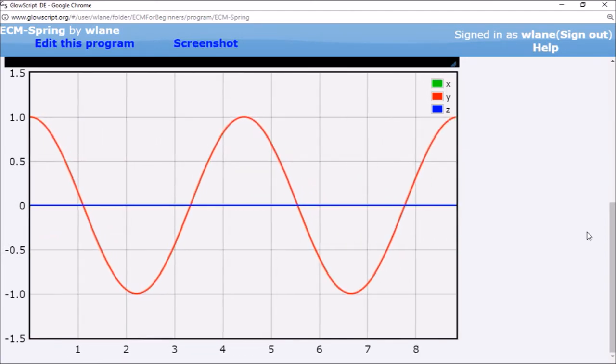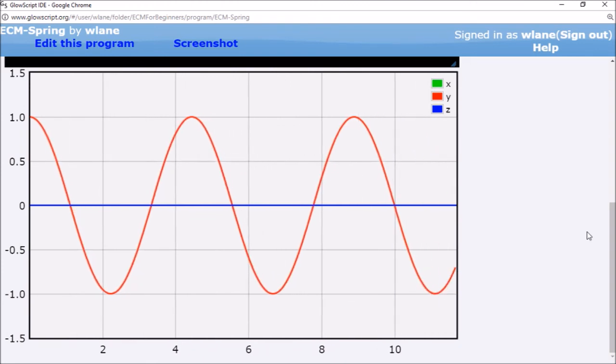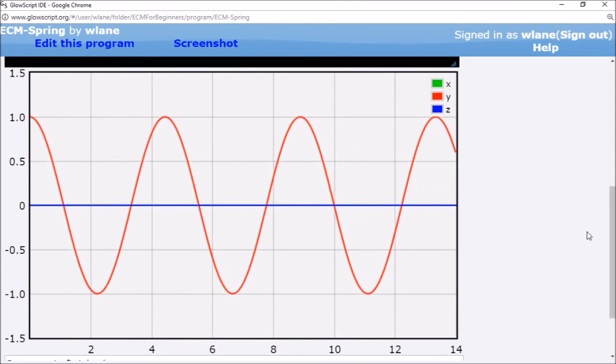You should now be able to use the Euler-Cromer method to animate an object experiencing a spring force. Follow the link in the description below to use this code to apply the Euler-Cromer method for the following values of the spring stiffness, mass, and initial position. How do the period and amplitude of the cosine curve change in each case?